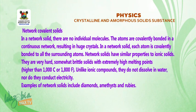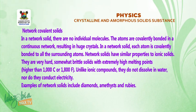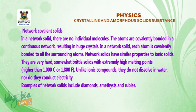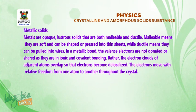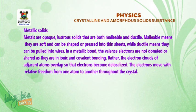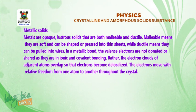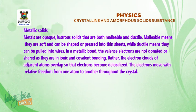In network covalent solids, there are no individual molecules. The atoms are covalently bonded in a continuous network, resulting in a crystal. Examples of network covalent solids are diamond and rubies. When we talk about metallic solids, metals are opaque and both malleable and ductile. Malleable means they can be shaped or pressed into sheets, while ductile means they can be pulled into wires.